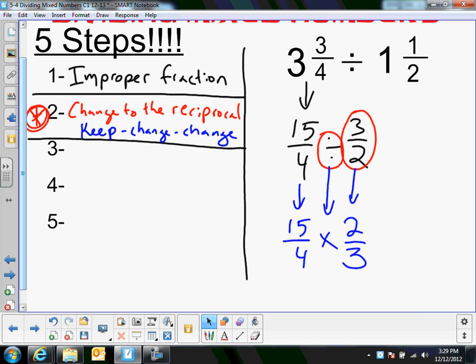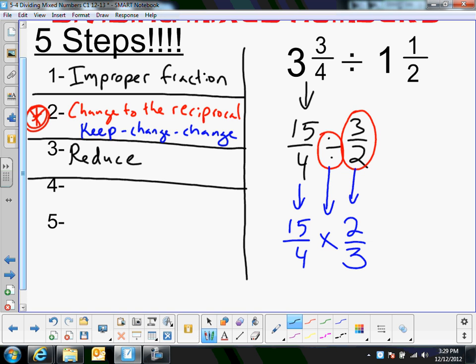That brings me to the third step, which is reduce, if you can. You're going to check your corners. You can't always, but sometimes you can. So let's see. I'll look at 15 and 3. Those are both divisible by 3. So 15 divided by 3 is 5, and 3 divided by 3 is 1. And then I'll look at the other two numbers, 4 and 2. They're both divisible by 2. 4 divided by 2 is 2, and 2 divided by 2 is 1. So I've reduced.